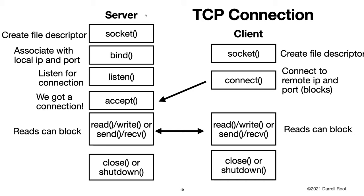We've now implemented our server. We used the socket system call to create a file descriptor, associated it with local port 4242 without specifying a local IP so the server listens on all local IP addresses, enabled listening for a connection, executed the accept system call and blocked there until we received a connection from telnet, wrote our data using the send call, and then shut down and closed our connection.